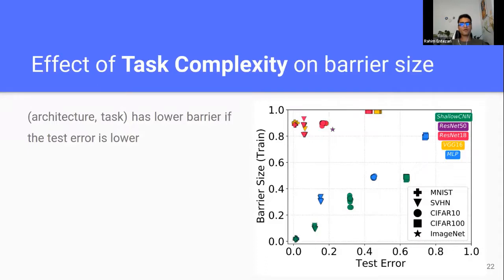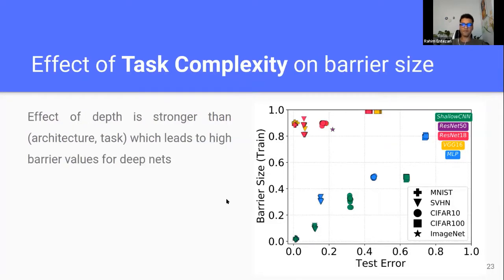The third phenomenon we looked at is the effect of task complexity. For a given pair of architecture and task, the higher the test error, the higher the barrier size. There is a highly positive correlation between test error and barrier size for shallow networks. However, if we increase the depth — corresponding to VGGs and ResNets — the effect of depth is stronger than the effect of architecture and tasks, which leads to high barrier values for deeper networks.